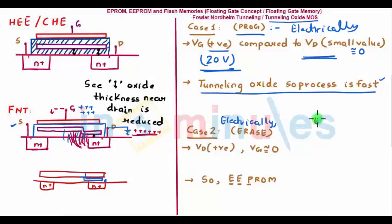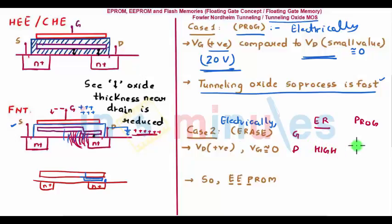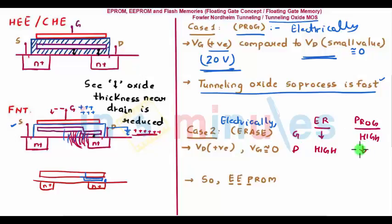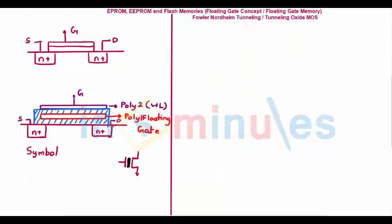This is Electrically Erasable Programmable Read-Only Memory (EEPROM). For erasing: apply a high drain voltage and a low gate voltage (nearly zero). For programming: apply a very high gate voltage and a drain voltage nearly equal to zero. The operation is entirely controlled by manipulating the gate and drain voltages.